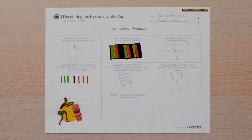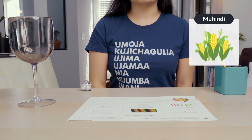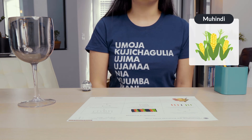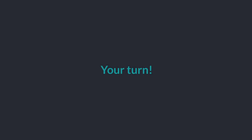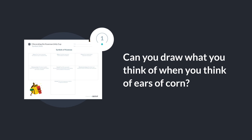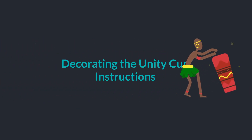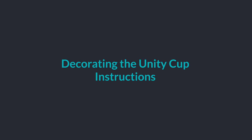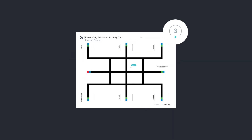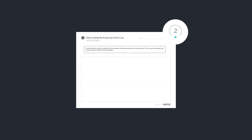The last symbol you will draw is the Muhindi, or the corn. The ears of corn represent the children in the family and hope for the future. Can you draw what you think of when you think of ears of corn? You may want to draw a number of ears to match the number of children in your family.